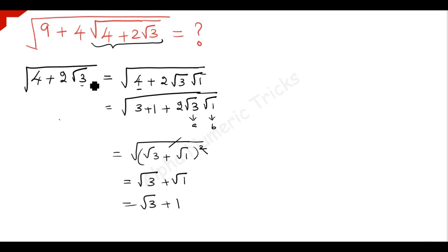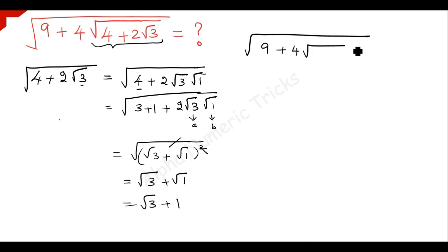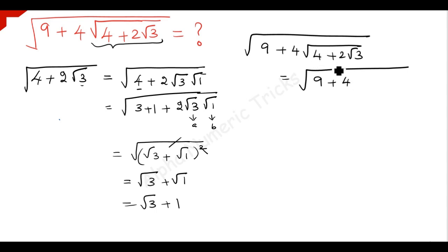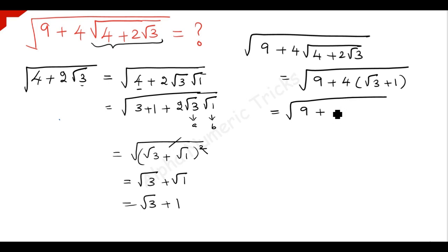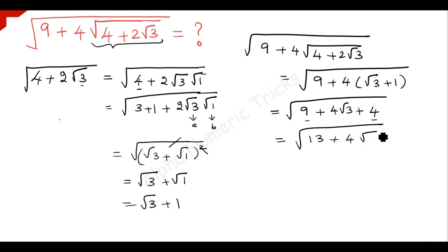So square root of 3 plus 1 is the value of the inner term. Now the given problem is square root of 9 plus 4 times square root of 4 plus 2 root 3, which equals square root of 9 plus 4 times (root 3 plus 1). Taking the 4 inside, we get 9 plus 4 root 3 plus 4 times 1, and 9 plus 4 gives us 13, so we have 13 plus 4 root 3.